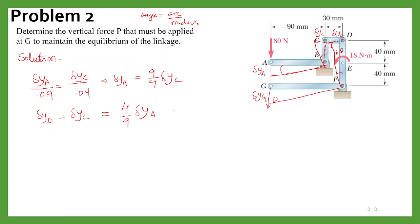And similarly we can write for delta y_g, so delta y_g upon 0.12 should be equal to delta y_d upon 0.08, so that means delta y_g should be equal to 12 by 8 delta y_d, or 3 by 2 delta y_d. So this is how you can calculate the relations.